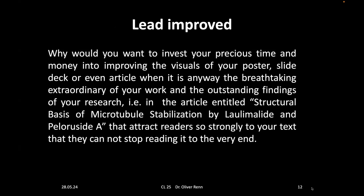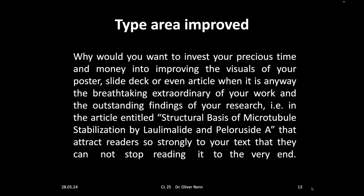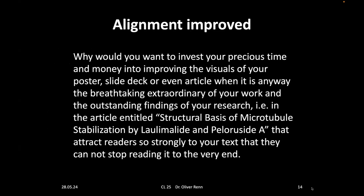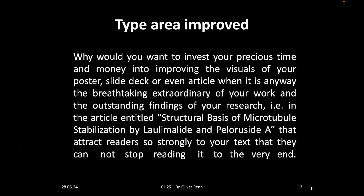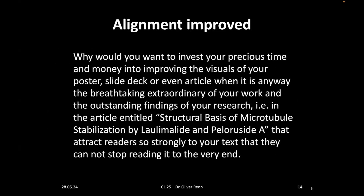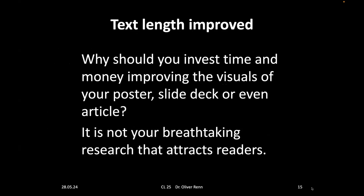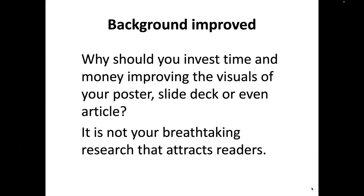If you improve the lead — the distance between the lines — so there is enough air between them, it's much easier to read. You can also improve the type area so the line length is better, with more space on the right and left. And if you improve the alignment, because justified text creates little holes between words where the eye has to jump, aligning to the left makes it much easier to read.